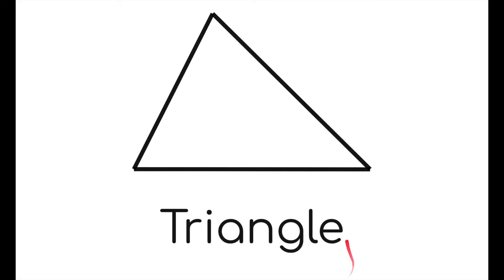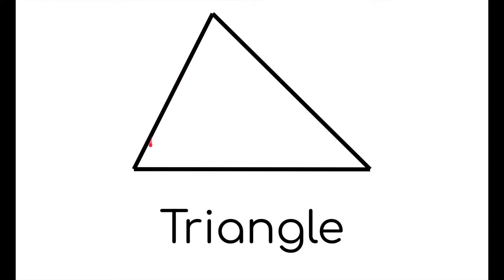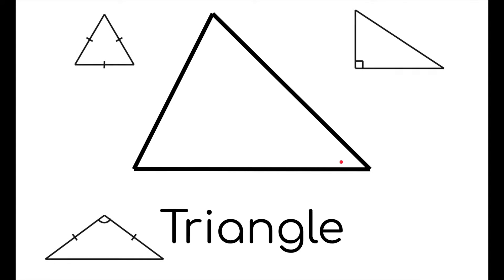A triangle is simply a three-sided shape — it can be any three-sided shape. However, there are actually many different types of triangles, and I'm going to explore all of them in this video.